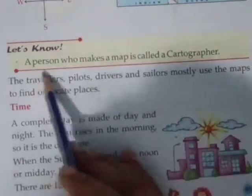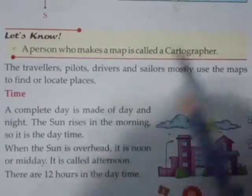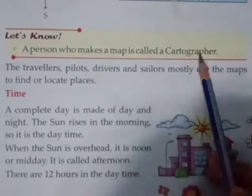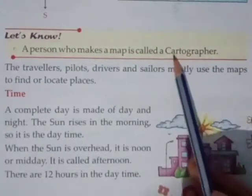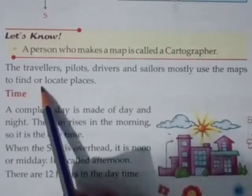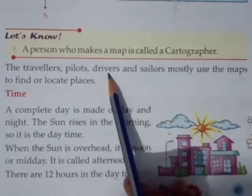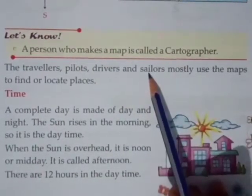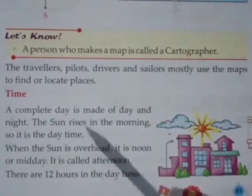A person who makes a map is called a cartographer. जो map बनाता है उसको हम cartographer बोलते हैं. जैसे जो photo click करता है उसे photographer कहते हैं, वैसे ही जो map बनाता है उसको cartographer कहते हैं. The travelers, pilots, drivers and sailors mostly use maps to find or locate places. Travelers जो घूमते फिरते रहते हैं, pilot जो plane उड़ाते हैं, driver जो drive करते हैं, और sailors जो boat या ship चलाते हैं — वो सब map use करते हैं ताकि आसानी से जगह ढूंढ सकें.